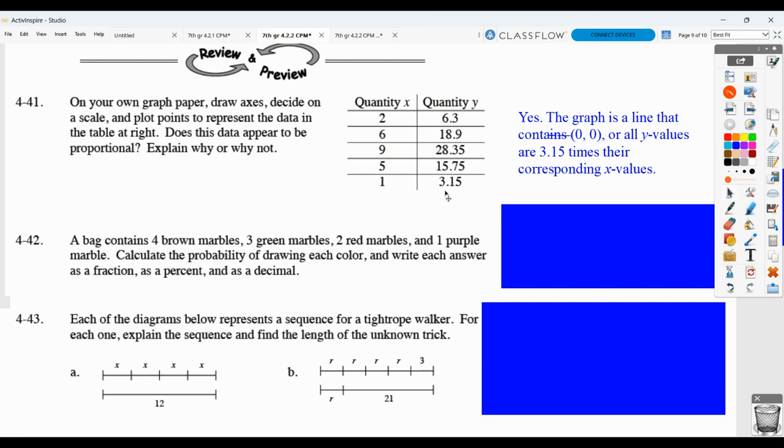Then, does this data appear to be proportional? And you should say yes, because the graph is a line that does go through 0, 0. And, all the Y values are 3 and 1500s times the X values. So, what happens is, again, for something to be proportional, it has to go through 0, 0. Or, that we could see it would go through 0, 0. And, the Y values have to have a constant multiplier from the X values. And, in this case, that multiplier is 3 and 1500s. So, again, do the graph as well.